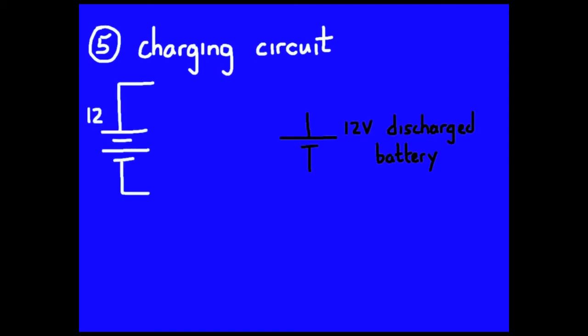We also looked at what a charging circuit looks like. So here's my dead battery, fully discharged, 12 volt battery. I need to hook up my power supply like this to drive current in the opposite direction through that dead battery. Placing a resistor and a diode here, a light emitting diode,